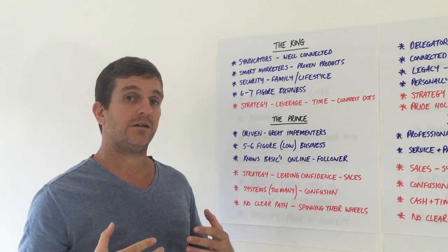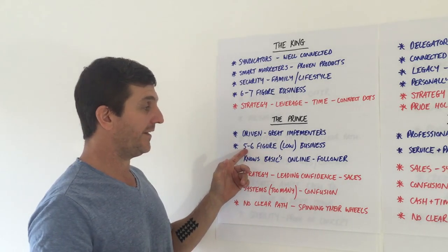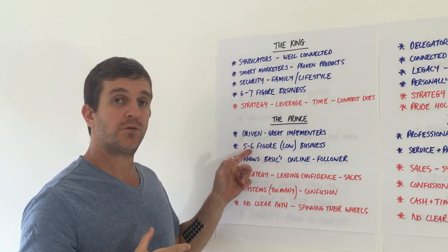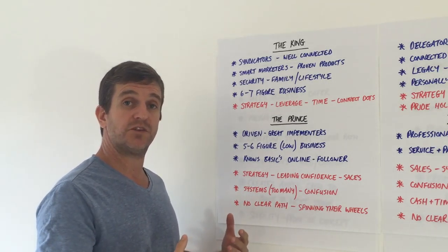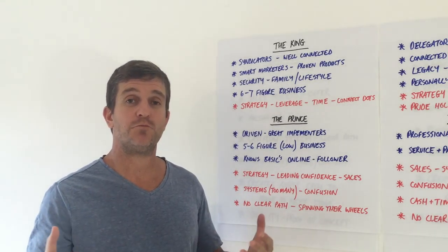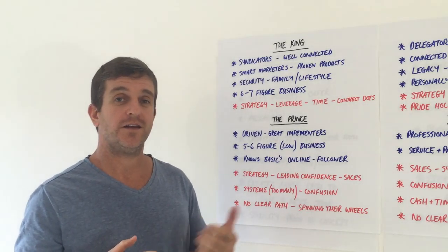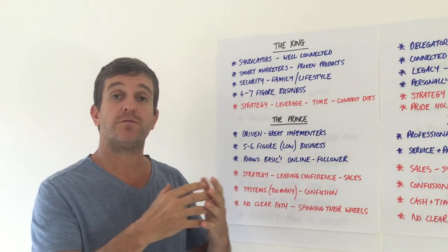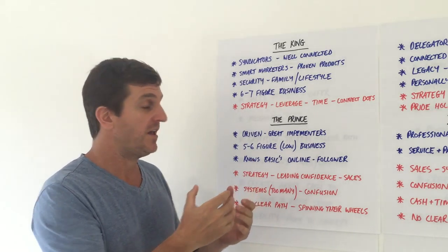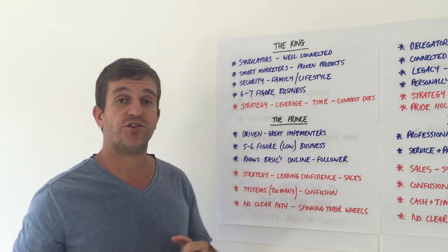Where we come down to strategy, their confidence is down, also sales - they're not skilled in sales, which is why they're stuck at five figures, sometimes early six figures. They have too many systems in place - lead pages, ClickFunnels, Aweber, MailChimp, ten different sorts of the same product. You're stuck in confusion.